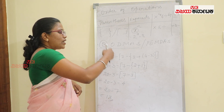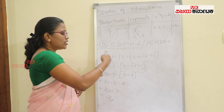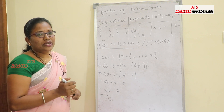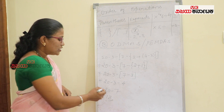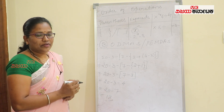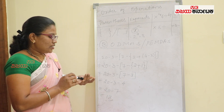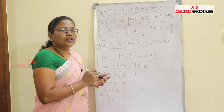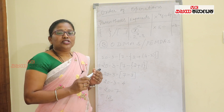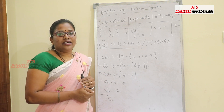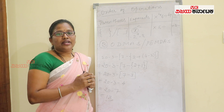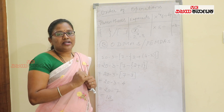We remove the bracket from the same number. We will lastly do the addition. So add minus 3 and minus 4 — that is minus 7. Then 20 minus 7 gives you 13.